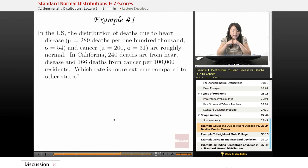Now let's do some problems. Here's example one. In the U.S., the distribution of deaths due to heart disease, 289 deaths per 100,000, standard deviation of 54, and cancer, a mean of 200, standard deviation of 31, are roughly normal.